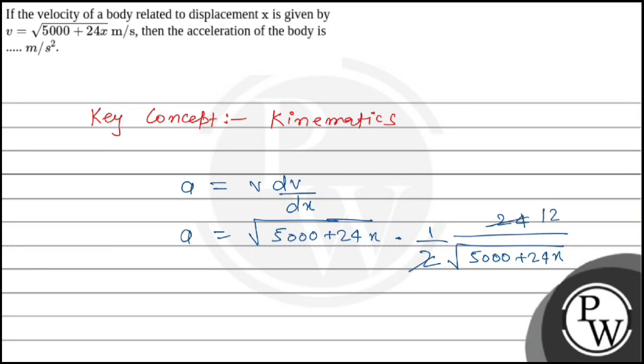So, from here we'll get 12, and 5000 plus 24x and 5000 plus 24x cancel out, so from here we'll get 12 meter per second square. So, the answer will be 12 meter per second square.